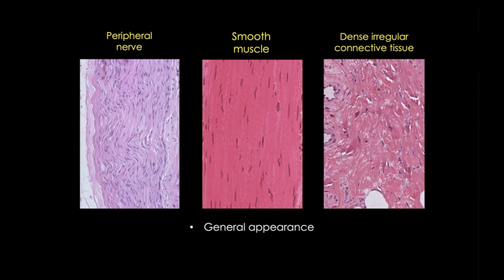Number one is the general appearance of the tissue fibers. Number two, the location and number of nuclei. And number three, color. Color is not something that I will generally tell my students to use as a distinguishing feature, but in this case color — or maybe intensity — can be helpful.